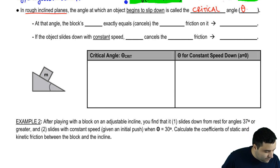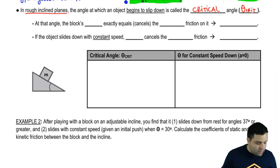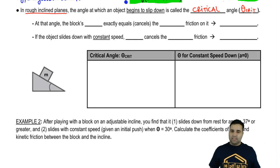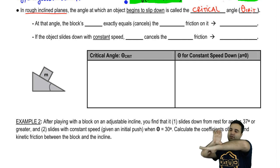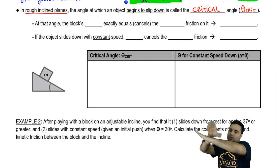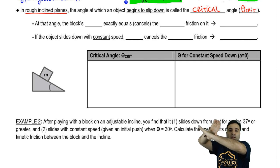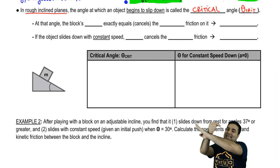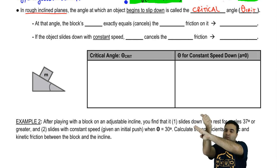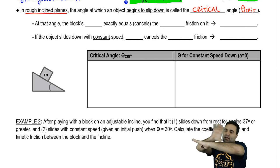We can write this as theta-crit or theta-critical. It's the angle at which the object begins to slide. Imagine you have a surface, you put a block on it, and you can tilt the surface. The block doesn't move at first because even though it has an mgx pulling it down the slope, there's a static friction force holding it. If it were a frictionless surface, even the tiniest angle would cause the object to accelerate, but on frictional surfaces that doesn't happen.